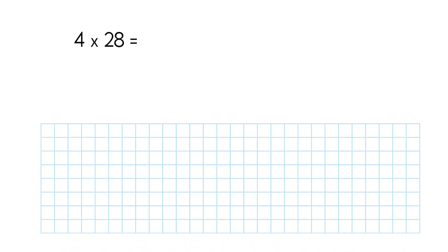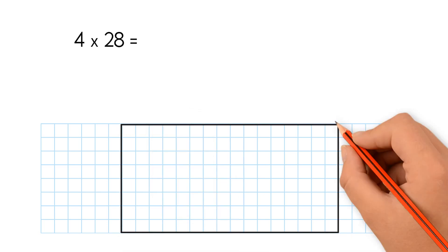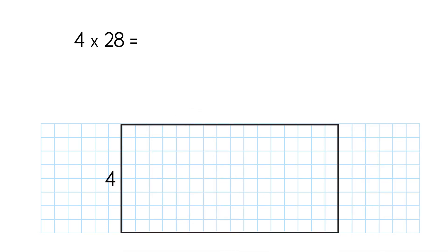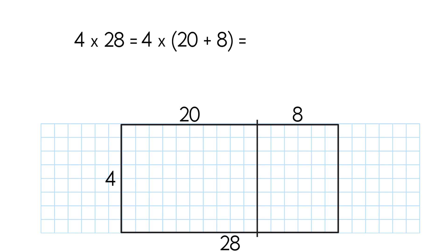We have 4 times 28. Let's draw an area model. It is a rectangle with sides of 4 and 28. The area of this rectangle represents the product of 4 times 28. Now we divide the rectangle into two smaller rectangles. We break up 28 to make 20 and 8. We rewrite 28 in expanded form as 20 plus 8. Then we multiply using the distributive property of multiplication.